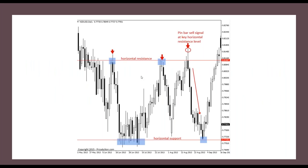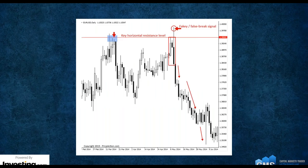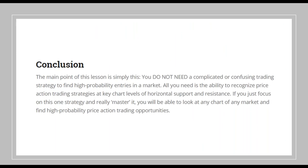We see this happen often. Let's look at countertrend examples of trading price action signals. Countertrend is just the opposite for downtrends — they key off resistance levels. The main point is this: you do not need a complicated and confusing trading strategy to find high-probability entries into the market. All you need is the ability to recognize price action trading strategies at key chart levels. If you focus on this one strategy and really master it, you'll be able to look at any chart of any market and find high-probability price actions.